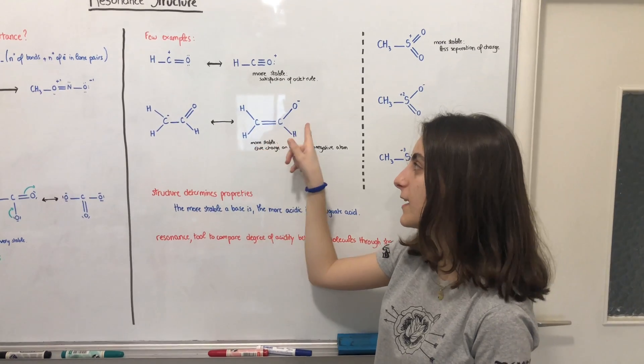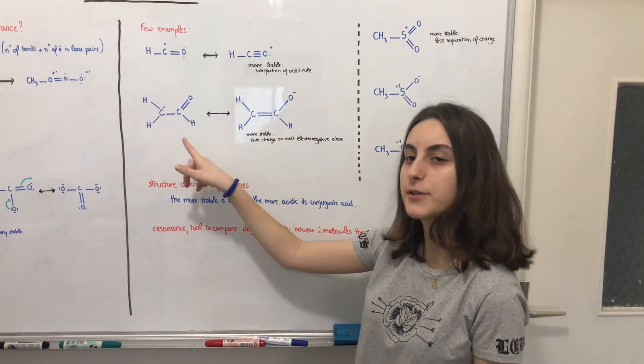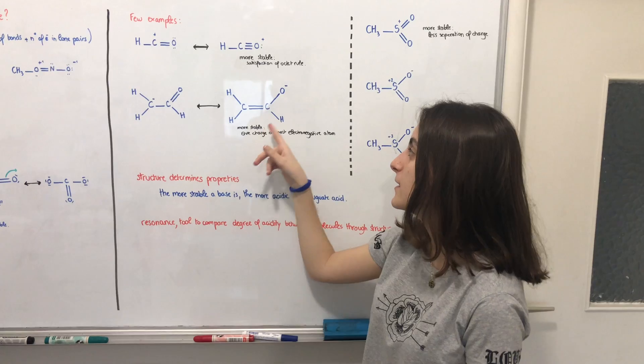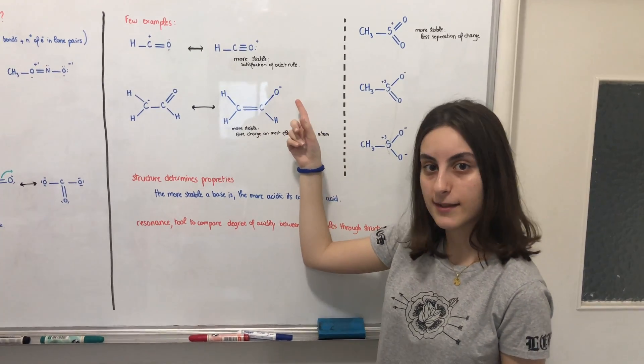In the second example, the second resonance structure is more stable than the first one, because the negative charge is on the most electronegative atom, which is the oxygen.